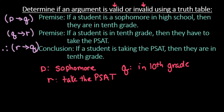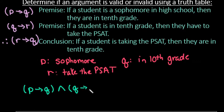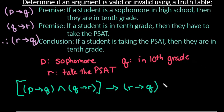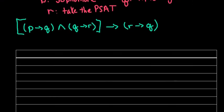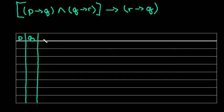What we want to do is create a truth table for the statement: if P then Q, and Q then R, then R then Q is a true statement. Our final column is going to be this long statement. We start with the three variables: P, Q, and R. We don't have any negations, so we don't need to add those columns.